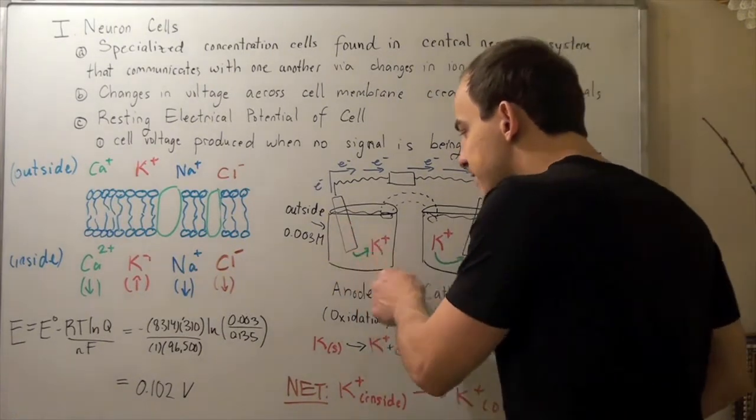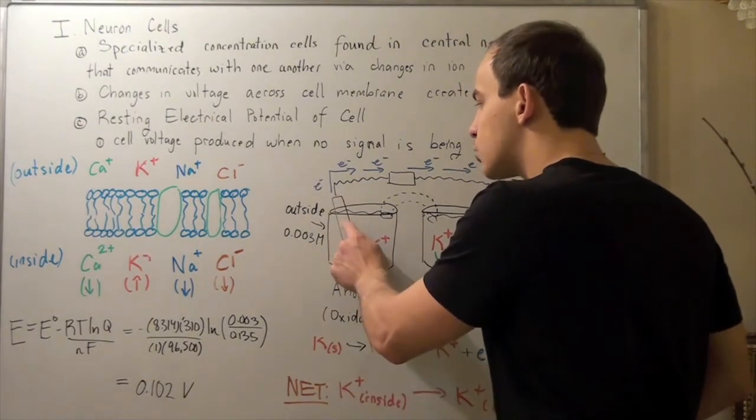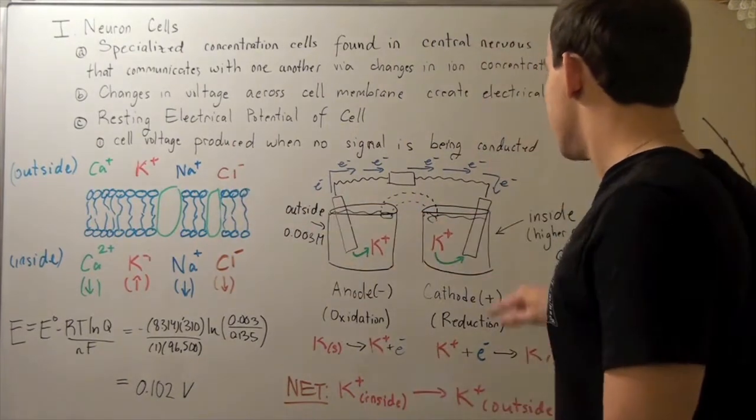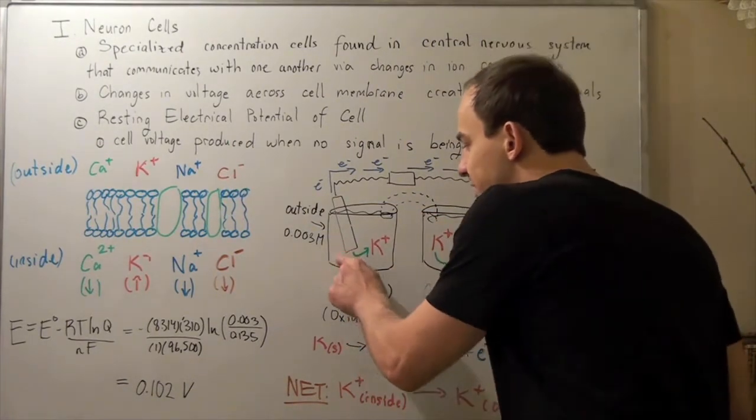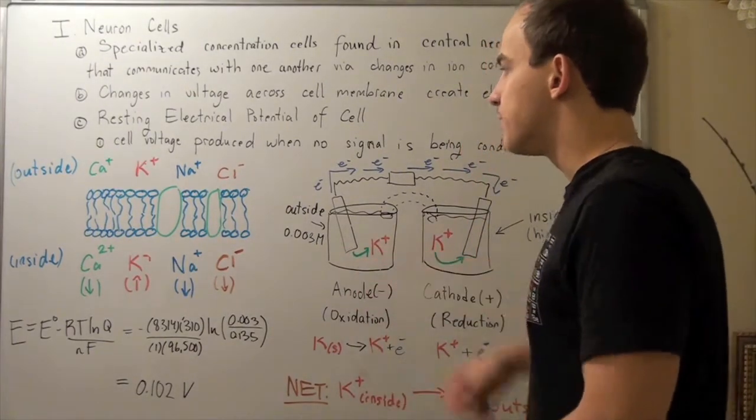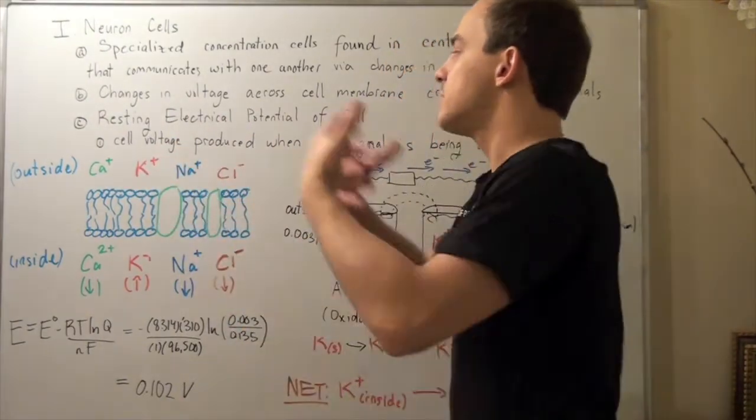Electrons leave this potassium ion, or leave the potassium solid electrode, and travel via the conductor, via the cell membrane, onto this electrode. At the same time, they release these potassium ions into our solution. So, the concentration on the outside becomes greater.